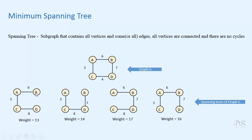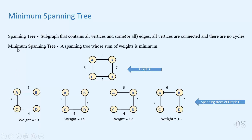For example, for this tree, the weight is equal to 6 plus 3 plus 4, equal to 13. A minimum spanning tree of graph G is a spanning tree whose weight is minimum among all the spanning trees of G. For example, for this graph, this is the minimum spanning tree as its weight is minimum.